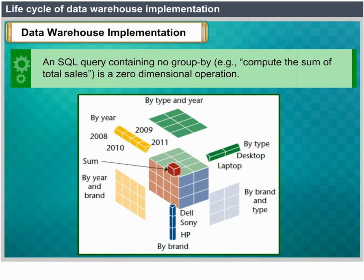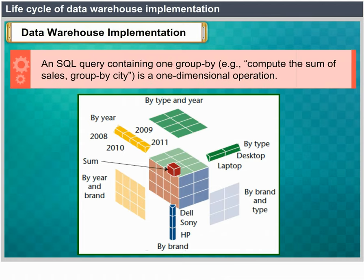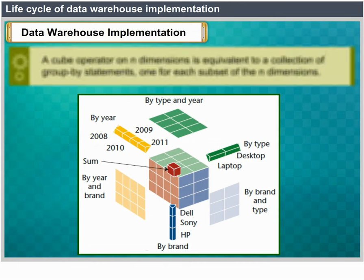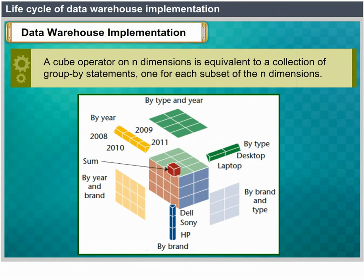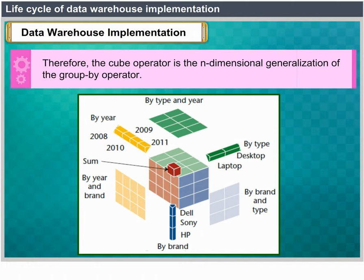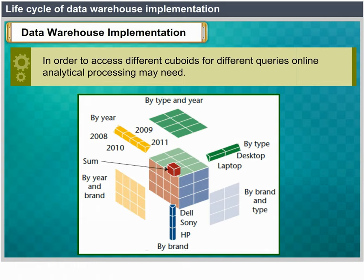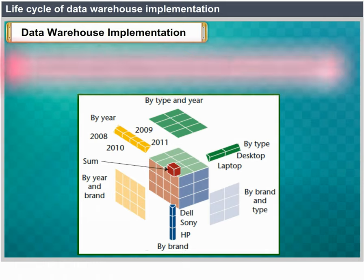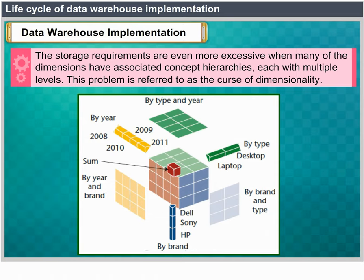An SQL query containing no GROUP BY — for example, computing the sum of total sales — is a 0-dimensional operation. An SQL query containing one GROUP BY — for example, computing the sum of sales GROUP BY city — is the N-dimensional generalization of the GROUP BY operator. Online analytical processing may need to access different cuboids for different queries. The storage requirements are even more excessive when many dimensions have associated concept hierarchies with multiple levels — a problem referred to as the curse of dimensionality.